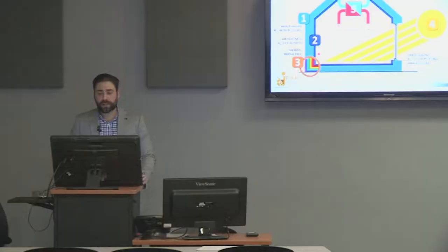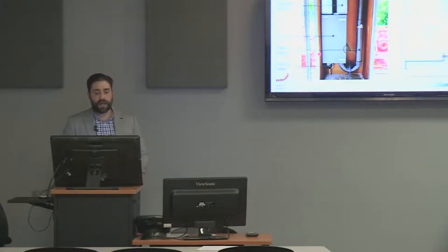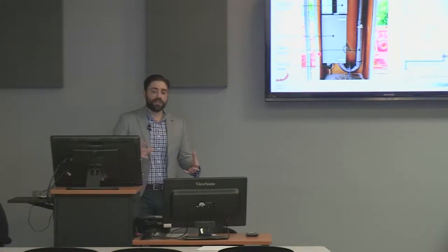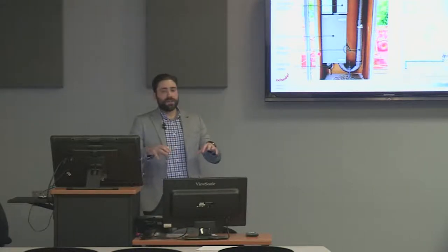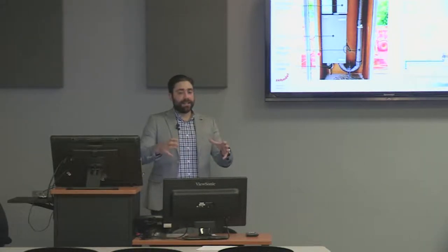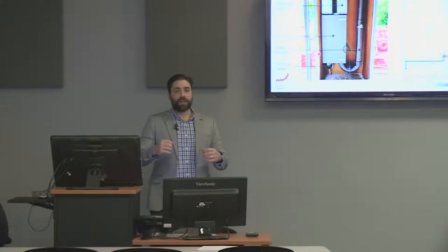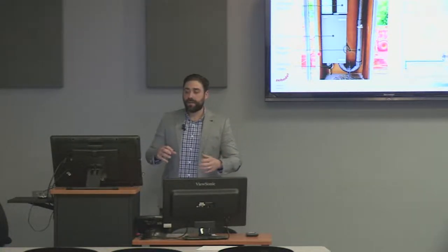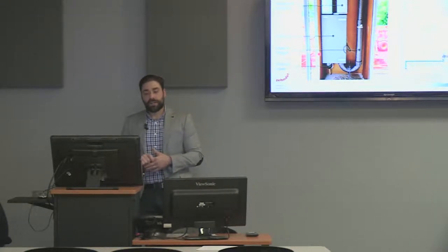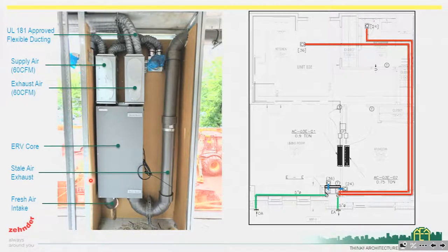So how are we doing it? We actually have a hybrid system — we're blending two approaches together. In each one of the residential units, we're islanding that unit, treating it as its own environment. We're installing a decentralized ventilation system inside each apartment, using the Zehnder ComfoAir 200 product, and that's going to be mounted on the exterior wall. So we have our exterior wall here, and that's where our Zehnder unit is mounted.